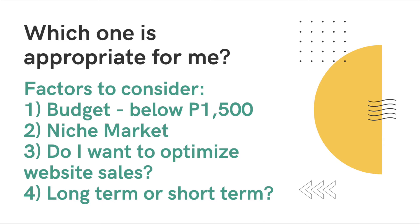So which one is appropriate for your business? There are certain factors to consider. Number one: budget. If your marketing budget is below 1,500 pesos per month, perhaps you can start with boosting your post, because you may initially want more people to know about your brand and products. Finding actual buyers costs more than simply getting your ad shown to a larger audience beyond your page likers.